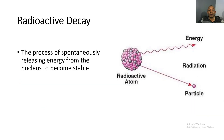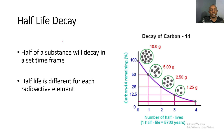First, let's do some background knowledge and look at radioactive decay. Radioactive decay is the process of spontaneously releasing energy from the nucleus of an atom to become stable. Here's our radioactive element — it releases a neutron or a particle from the atom in order to be stable, and it also releases energy. So radioactive decay is releasing a particle and releasing energy from the nucleus in order to become stable.